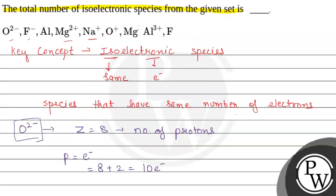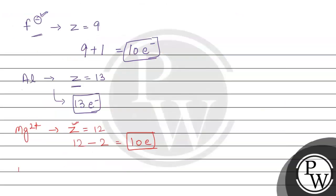The next species is sodium positive (Na⁺). For sodium the atomic number is 11. The total number of electrons in a neutral species would be 11. But this species has a positive charge, which means one electron has been removed (plus 1). So 11 minus 1 gives us 10 electrons in the Na⁺ species.